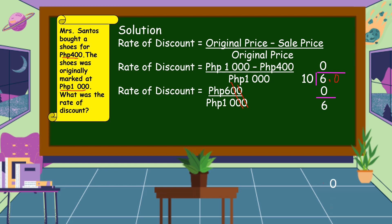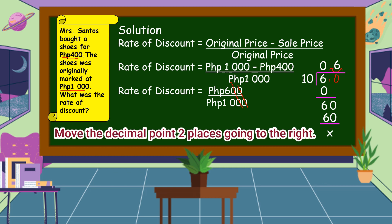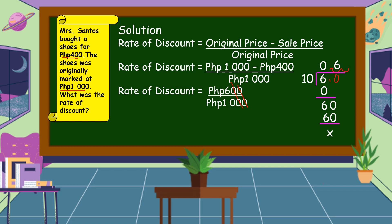Bringing down 0 gives us 60. Copying the decimal point into the quotient: 60 ÷ 10 = 6, and 6 × 10 = 60, so 60 − 60 = 0. The result is 0.60. Since we are finding the rate of discount in percent form, we move the decimal point two places to the right and affix the percent sign. Therefore, the rate of discount is equal to 60%.